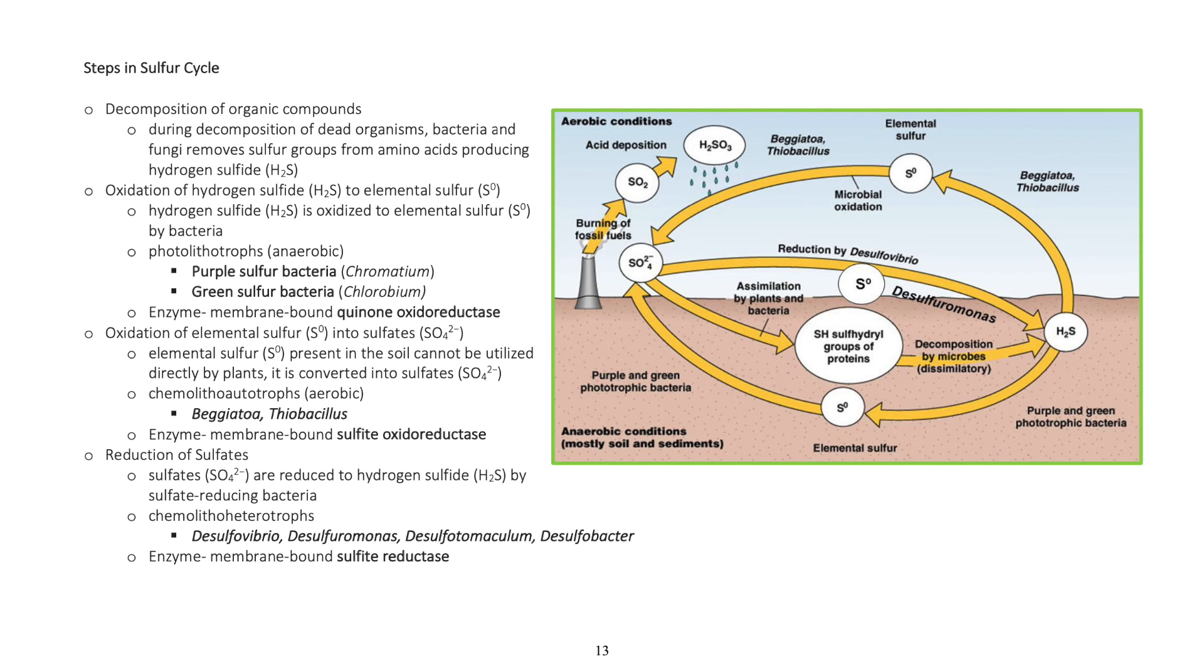Oxidation of hydrogen sulfide to elemental sulfur: Hydrogen sulfide is oxidized to elemental sulfur by bacteria. Photolithotrophs (anaerobic): Purple sulfur bacteria (Chromatium), Green sulfur bacteria (Chlorobium).